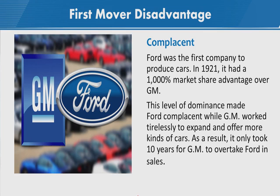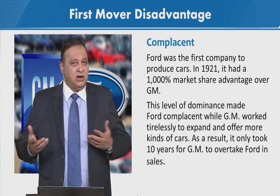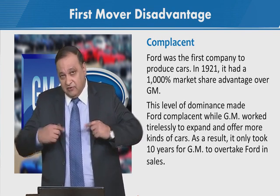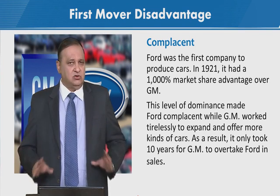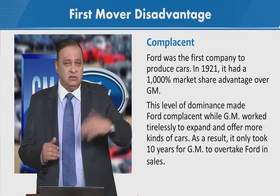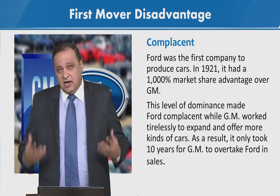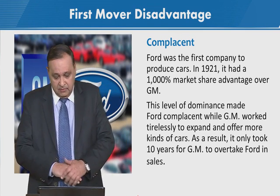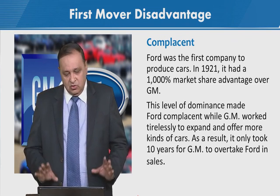Ford became relaxed — feeling that we are the champions, nobody can challenge us, we are very far ahead, we are so big. Ford had this feeling that we are 1,000 times ahead of General Motors, our closest follower, so we don't need to worry very much. But this attitude led to their downfall. As a result, it only took 10 years for GM to overtake Ford in sales.